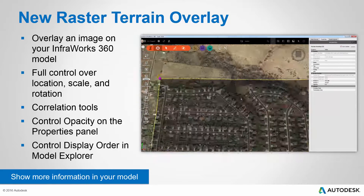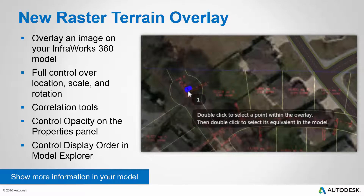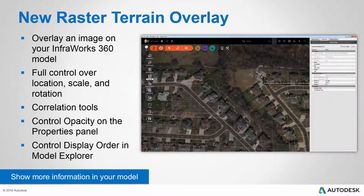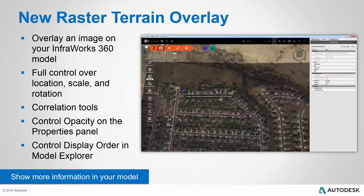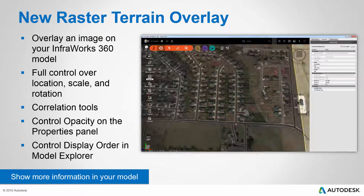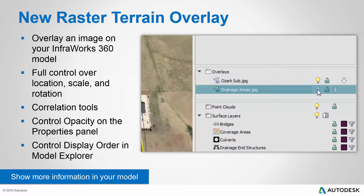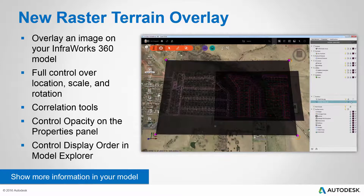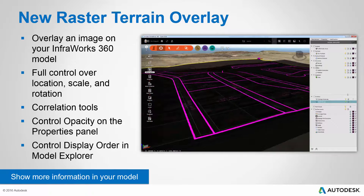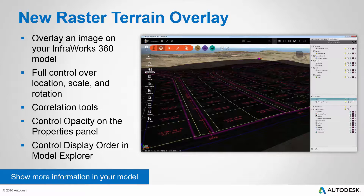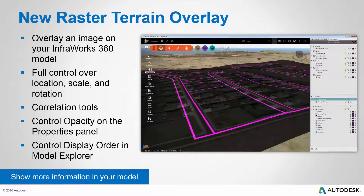Notice how we're using opacity to see through the image to the model beneath. We're using simple right-click correlation tools to align three points in the image with three corresponding points in the model — it's as simple as point and double-click until you get the image lined up just the way you like it. You can also control the display order of your images using the Model Explorer panel, allowing you to have multiple images and bring them to the top or bottom. Combined with opacity, you can do a lot of interesting things leveraging these overlays.